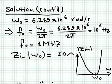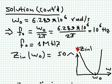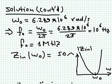The impedance behavior shows that at DC the capacitor is an open circuit, giving infinite impedance; at infinite frequency the inductor is an open circuit, also giving infinite impedance. At the resonance frequency ω₀ = 6.289 × 10⁶ rad/s, equivalent to 1 MHz, the input impedance reaches its minimum of 50 ohms — it does not go to zero because of the resistor.